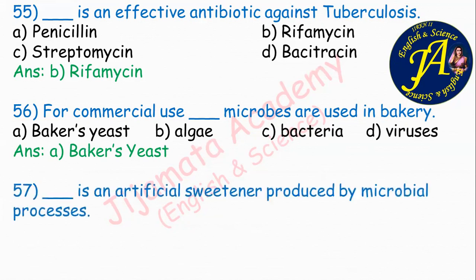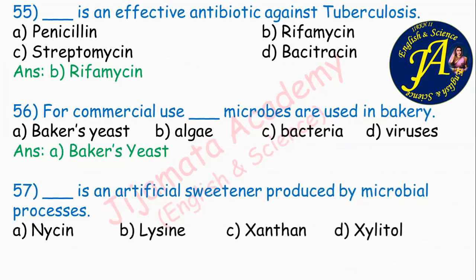Dash is an artificial sweetener produced by microbial processes. Options are nicene, lysine, xanthene, xylitol. Correct answer is option D: xylitol. Xylitol is an artificial sweetener with low calories.